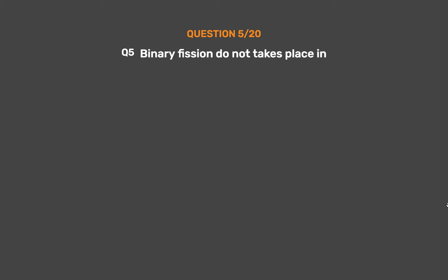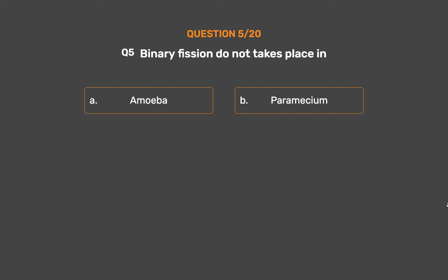Question No. 5. Binary fission does not take place in: Option A – Amoeba. Option B – Paramecium. Option C – Bacteria. Option D – Yeast.